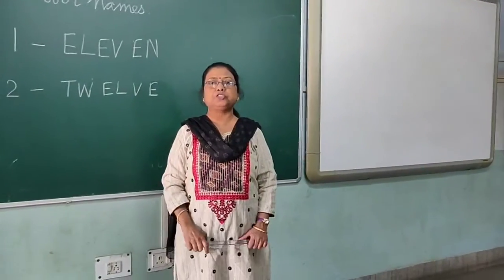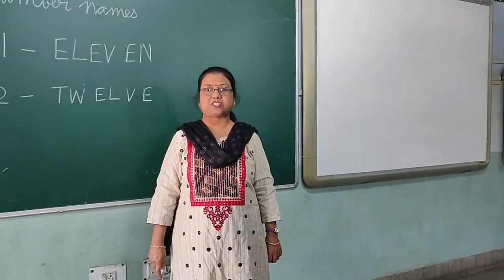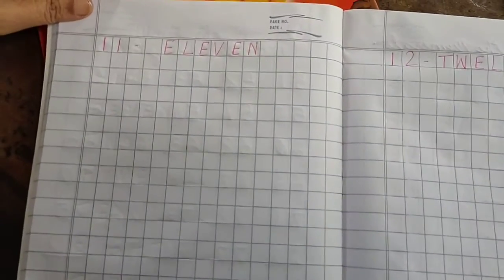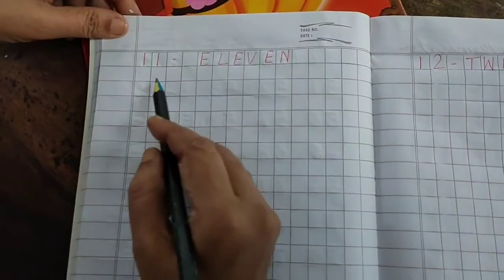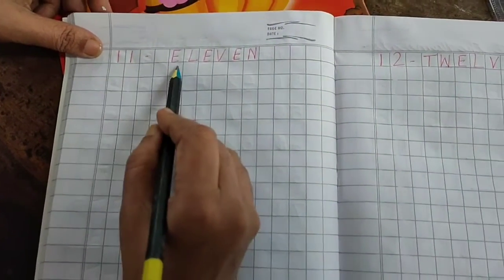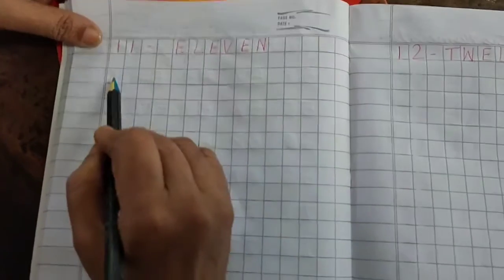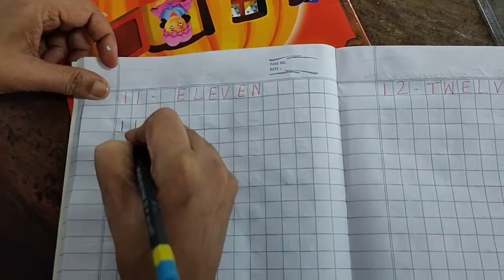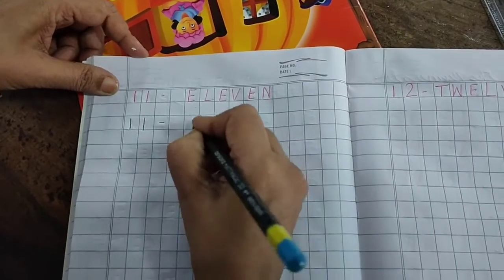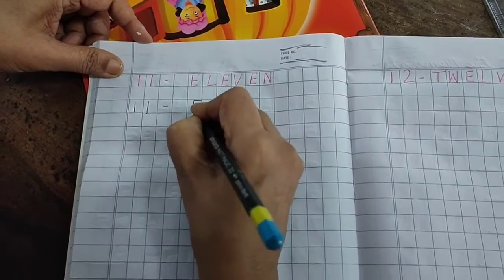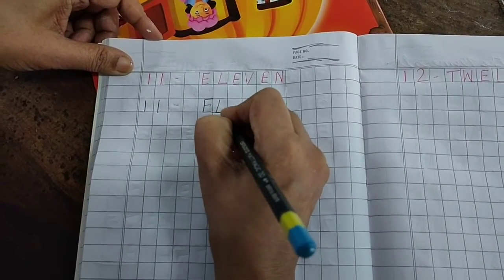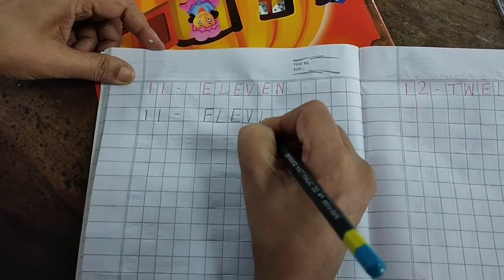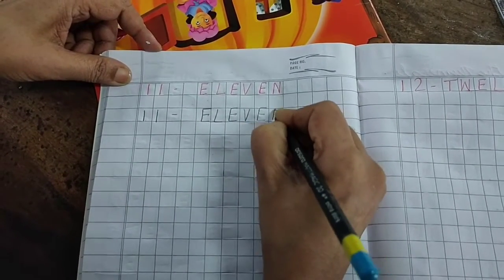Now I will show you how to write in your hands copy. Okay children. Now you will write eleven, spelling of eleven in this math copy. 11. Put a dash. Write spelling of eleven. E, L, E, V, E, N. 11.